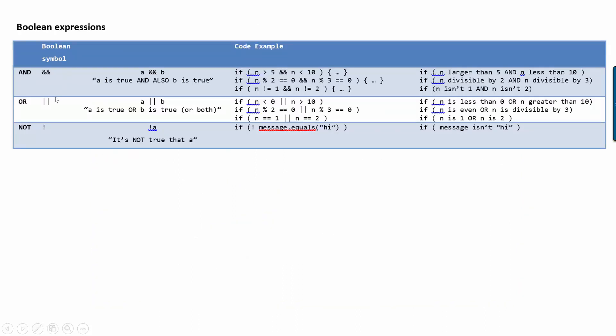Okay, quick reminder about and, or, and not. And I like to pronounce and also. So we'd say A is true and also B is true for that to evaluate to true. Or doesn't mean the same thing as or in English. It means A is true or B is true or they're both true. And then not, I usually pronounce the not beforehand. So I'd say it's not true that A.